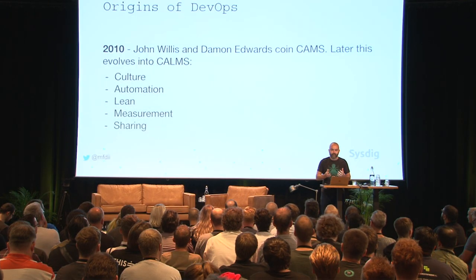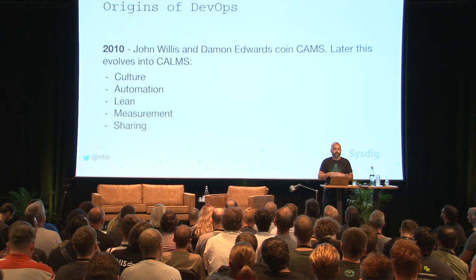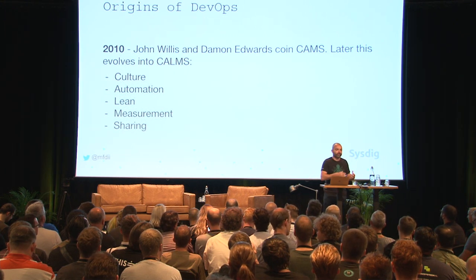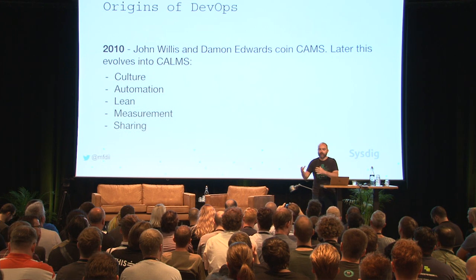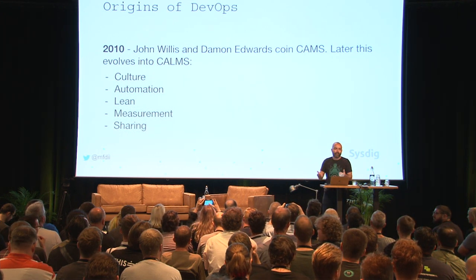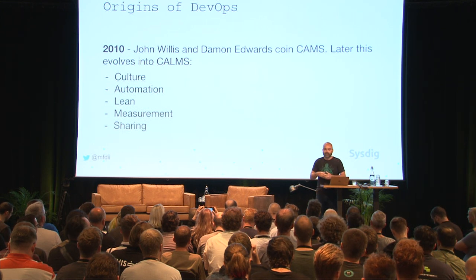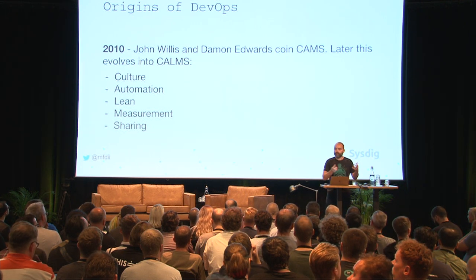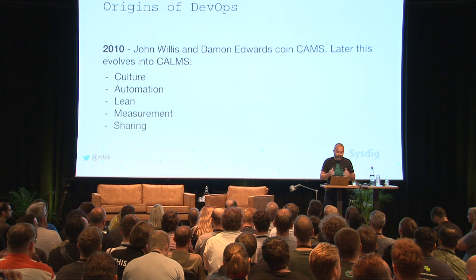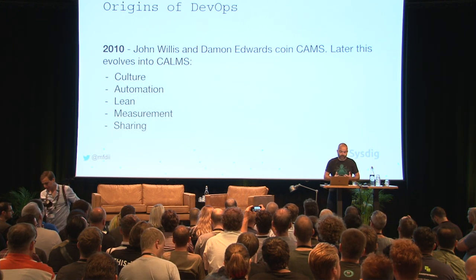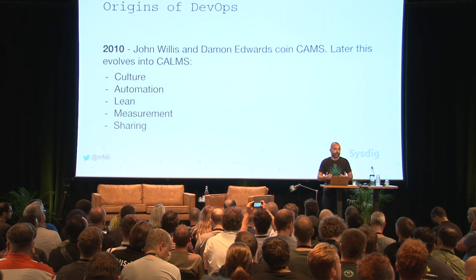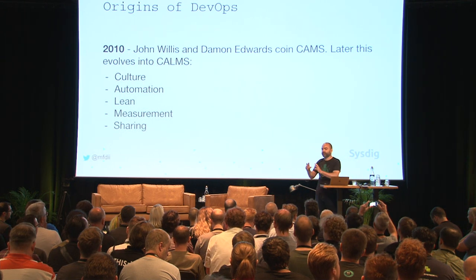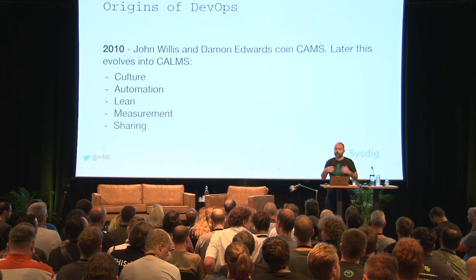In 2010, John Willis and Damon Edwards coined the term CALMS, which I define as the first principles of DevOps. First principles, in philosophy and physics, are principles that can't be derived from something else. For example: 'man is mortal' is a first principle; 'Socrates is mortal' is derived. CALMS stands for Culture, Automation, Lean, Measurement, and Sharing. Lean came in a bit later when Jez Humble started contributing to the DevOps definition, particularly around continuous integration and continuous delivery.